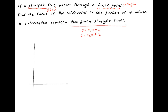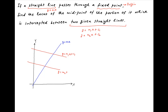Now let's represent this information on the Cartesian plane. We have the line y equals mx passing through the origin, and we have the two given straight lines y equals m1x plus c1 and y equals m2x plus c2. Let's assume that these lines cut the line y equals mx at the points A and B respectively.